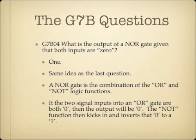What is the output of a NOR gate, given that both inputs are zero? The answer is one. A NOR gate is the combination of the OR and NOT logic functions. If both inputs into an OR gate are zero, the output will be zero. The NOT function then inverts that zero to become a one.